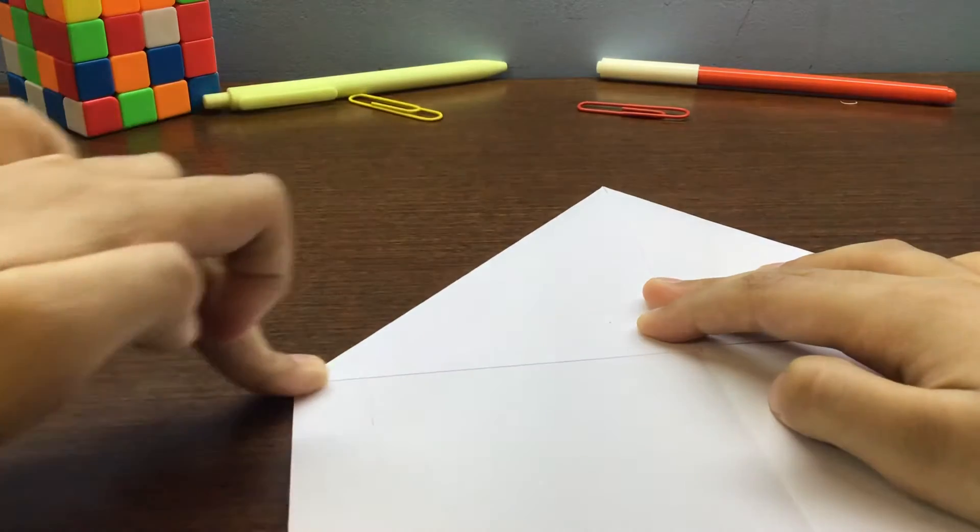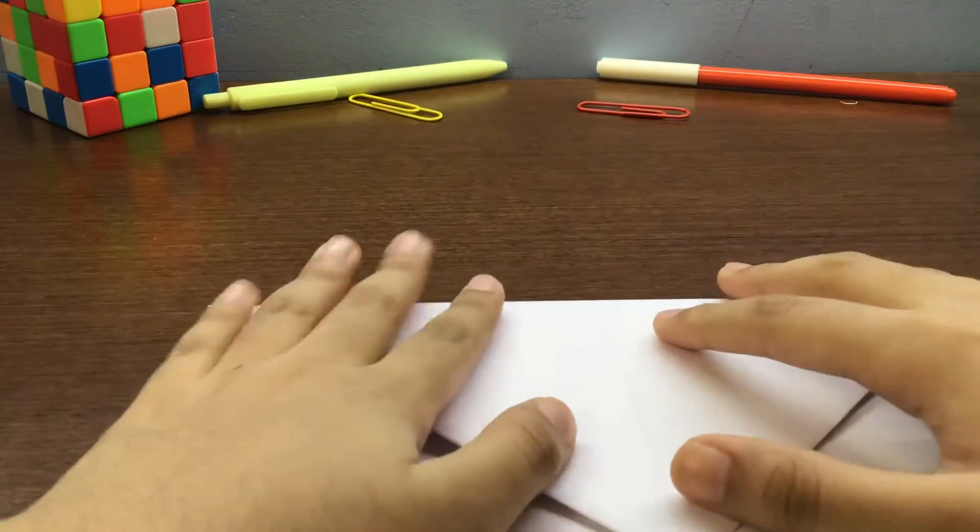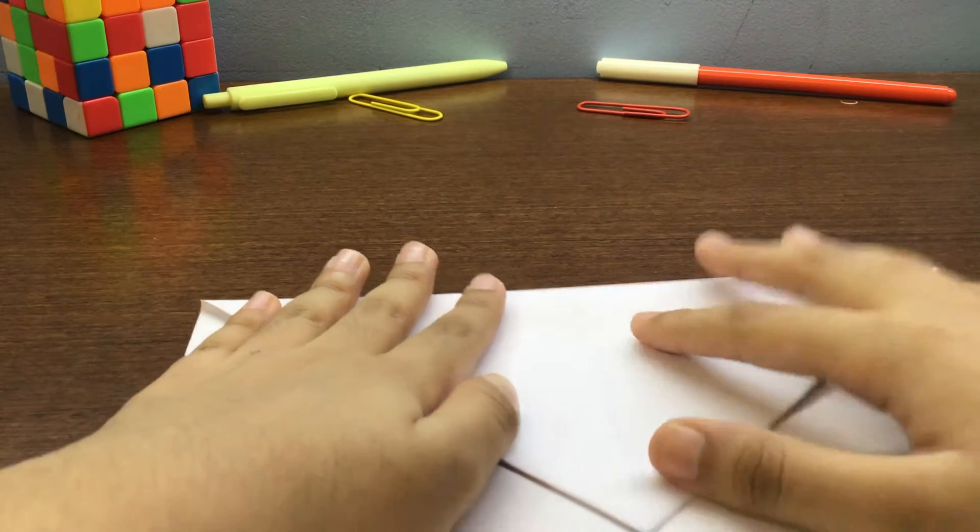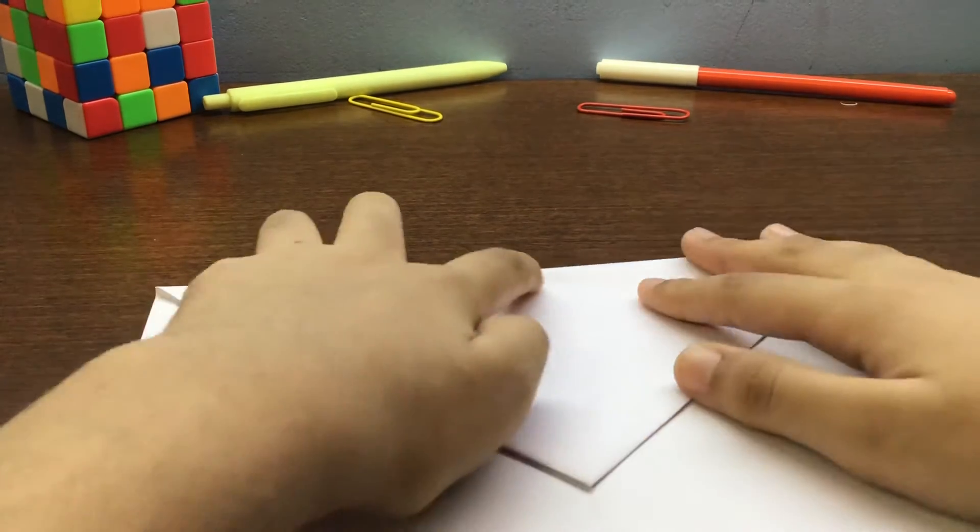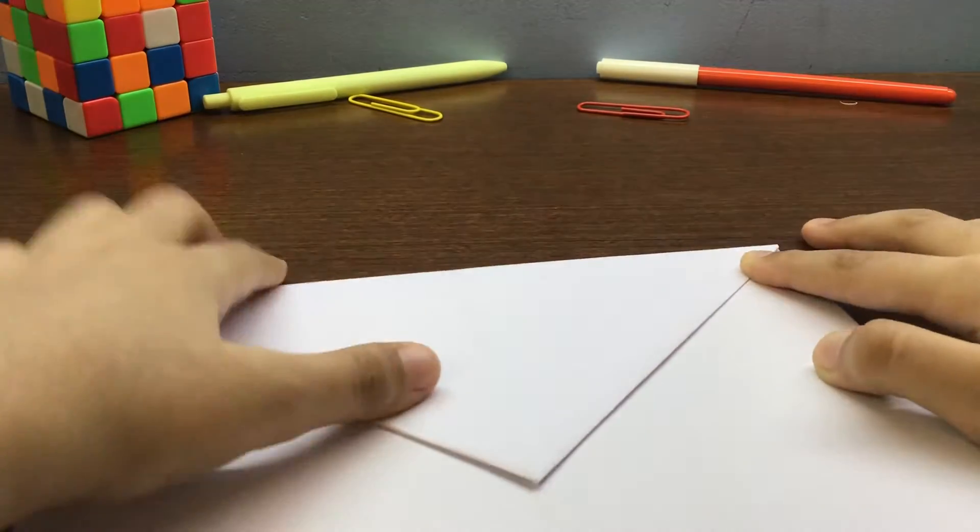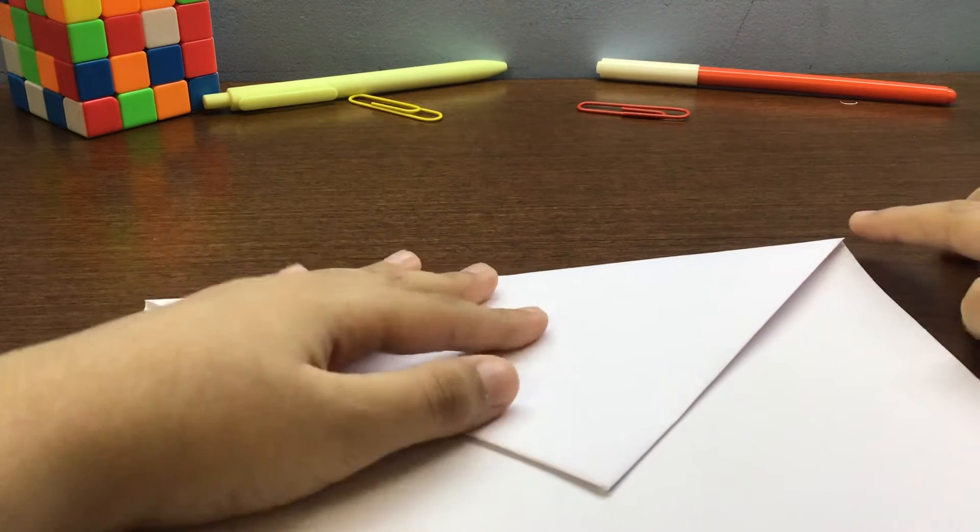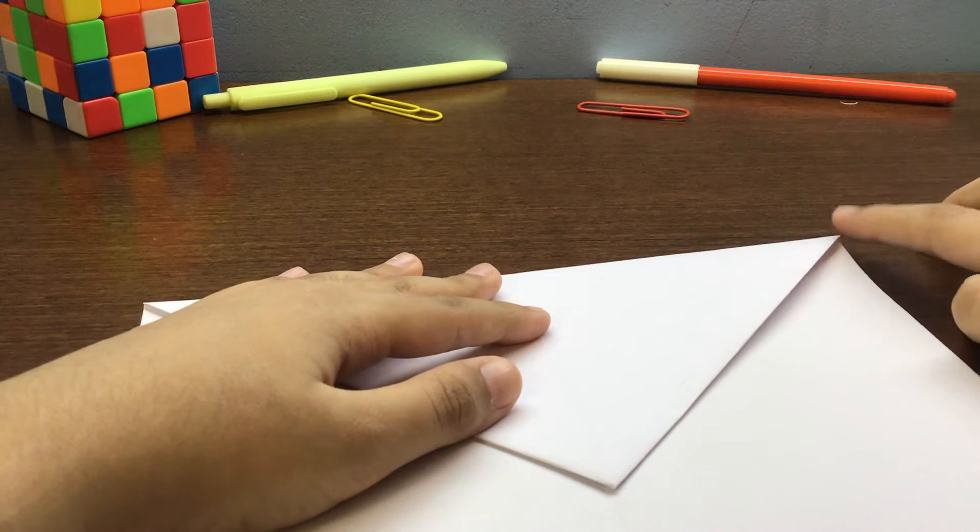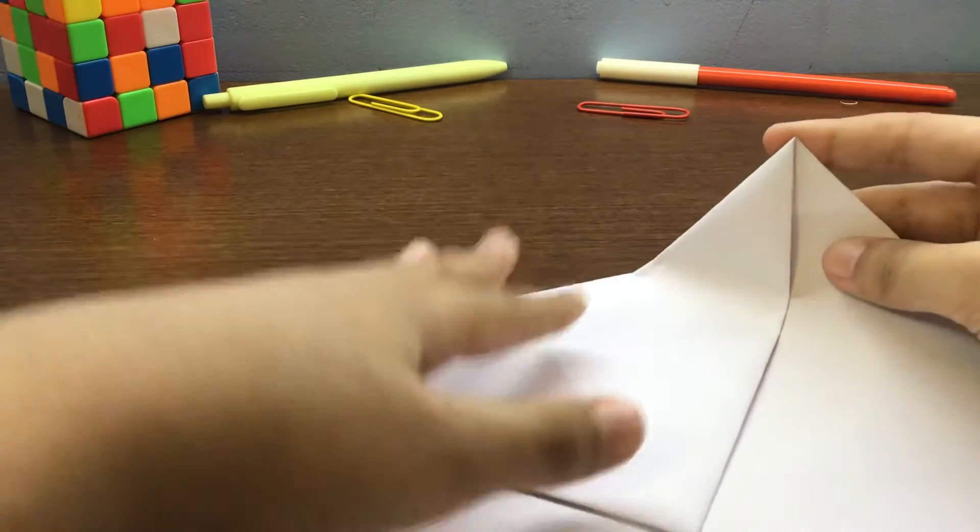And after this, we need to fold this whole thing down and line this crease with this crease. Align those like this. Now look carefully, we will make this point right here touch this crease, but watch carefully how I do it.